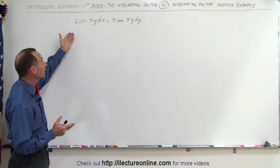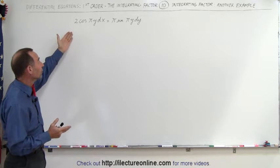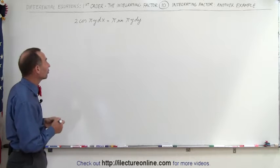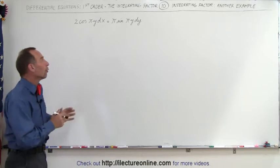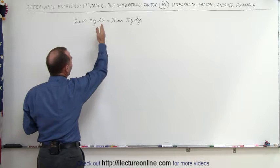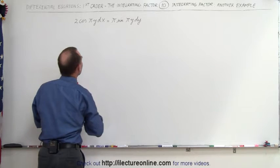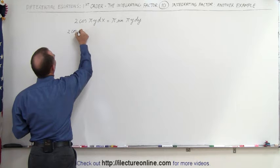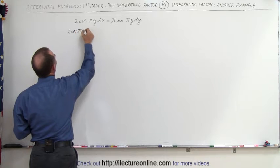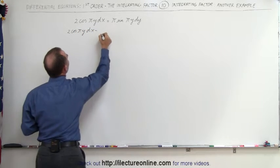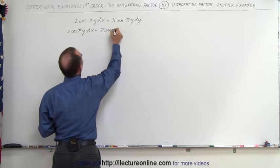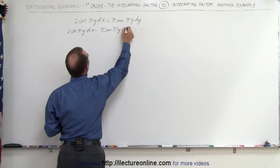The reason is because we have a differential equation that involves cosines and sines. So let's first put it in the general format by moving what's on the right side to the left side, equal to zero. That gives us 2 times the cosine of πy times dx minus π times the sine of πy dy equal to zero.